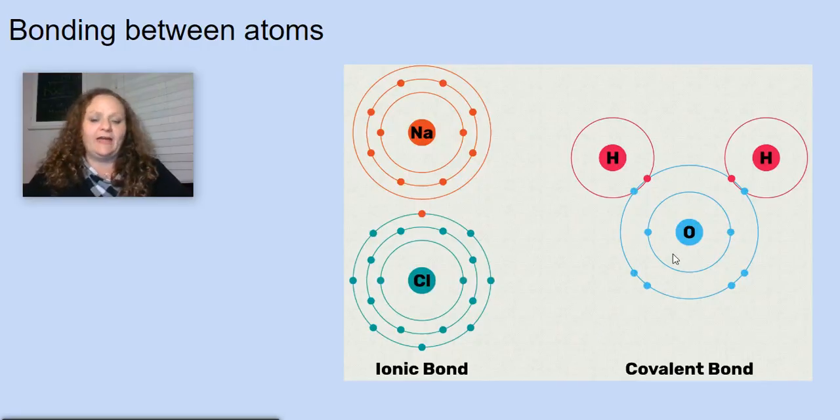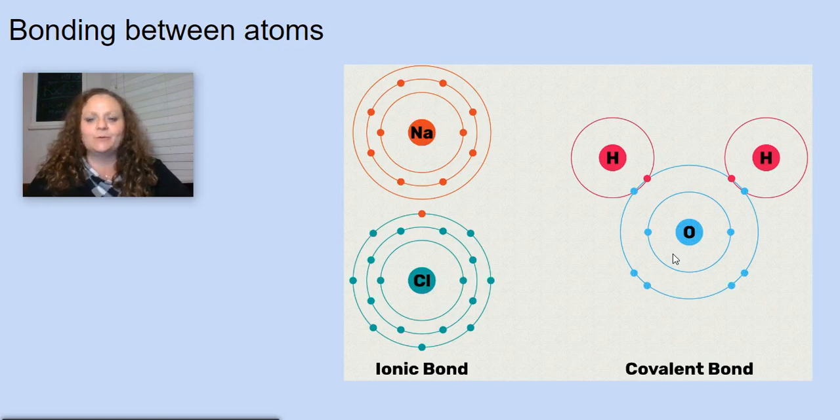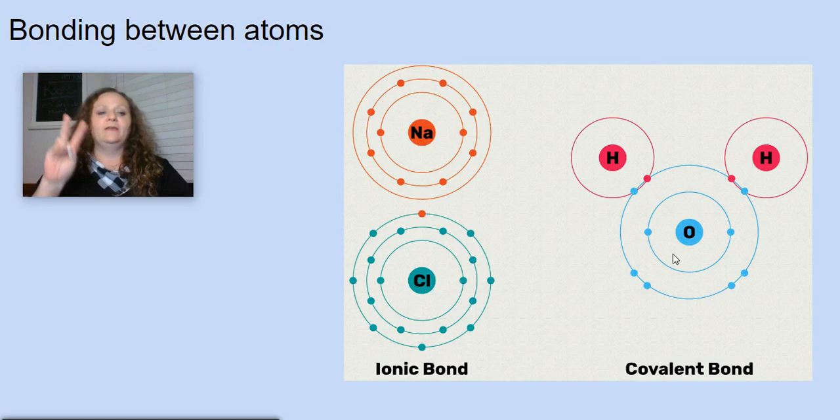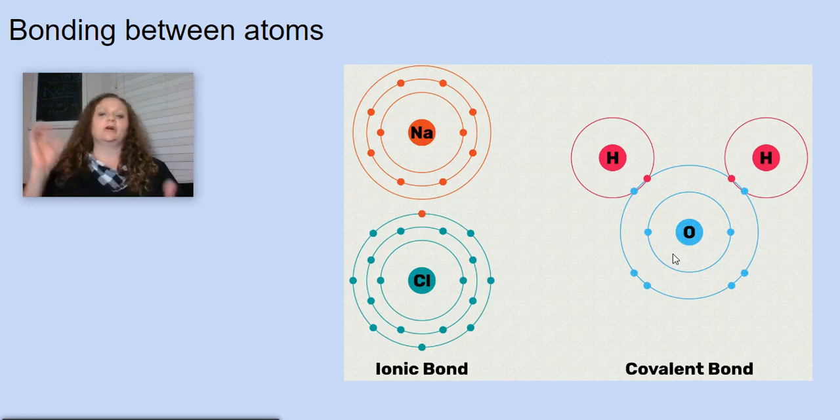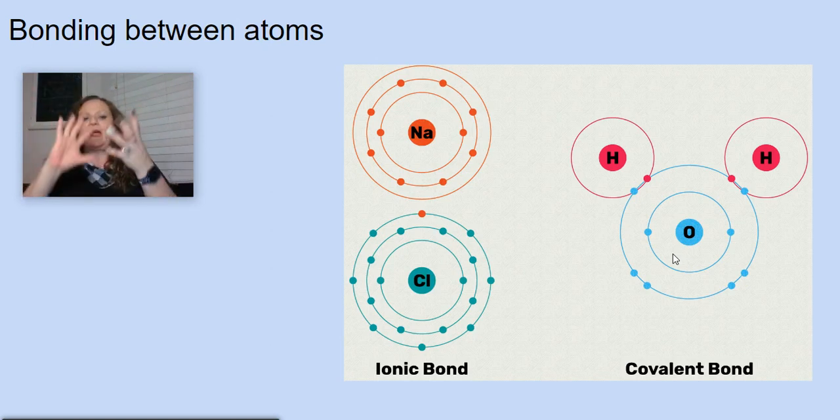We're going to start with a review of atoms. As you'll recall, atoms are basically made up of three components: the protons and neutrons which are found in the nucleus, and then the electrons that are negatively charged and live in these outer valence shells that surround the nucleus of the atom.